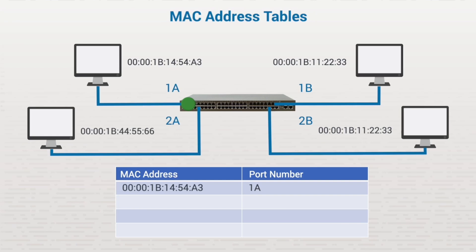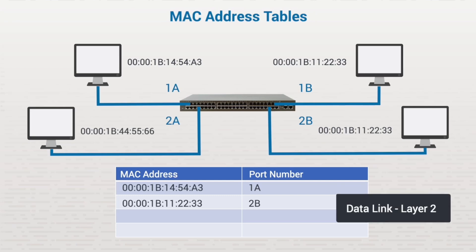The MAC address of the device sending a packet is added to the MAC address table from the source MAC address tag in the header, which also includes a destination MAC address. If the switch doesn't already have the destination MAC address stored, it broadcasts the packet to all ports in its broadcast domain except the port that sent it. The correct port responds and its MAC address is added to the table; all other devices dismiss the broadcast. MAC address table entries are temporary and are repopulated regularly. Note that MAC addresses are in the header of the frame and used at the data link layer, or Layer 2 of the OSI model.